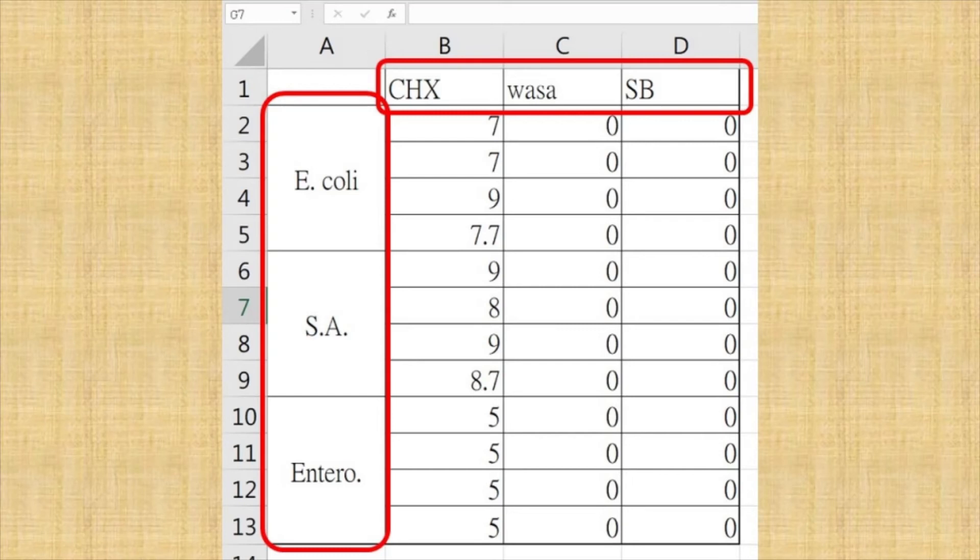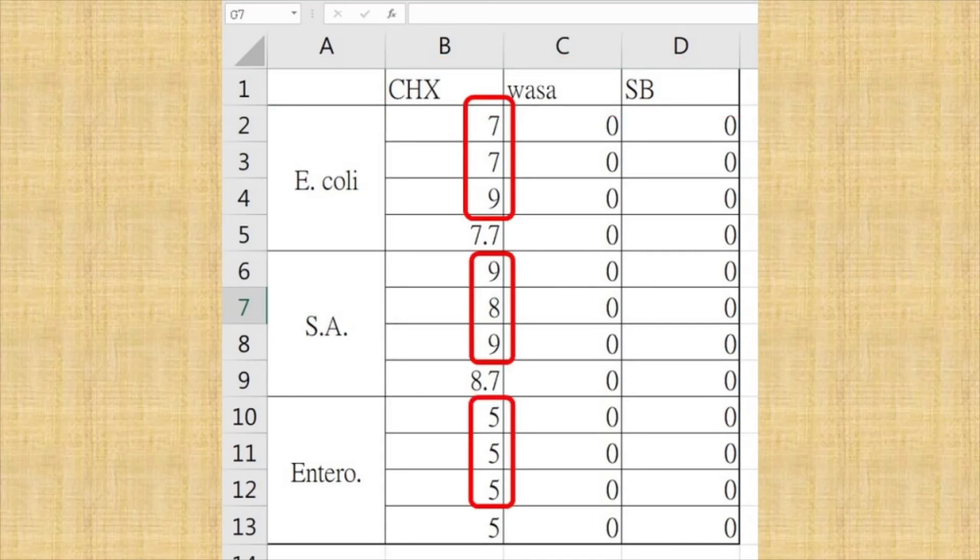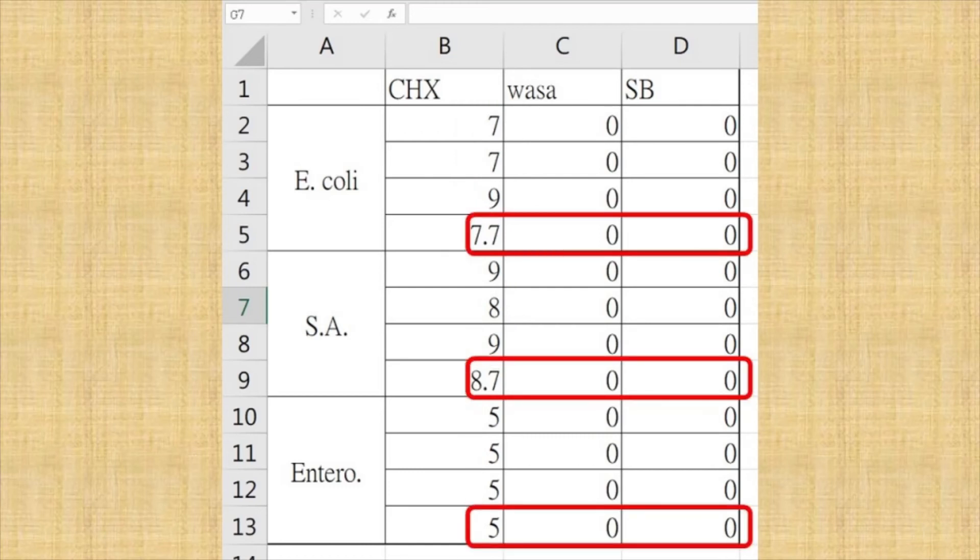Here is the data of our experiment. At the side, we can see the test substance and bacteria. And the number here is the diameter of the inhibition zone. And here is the average. The unit is millimeter. We can see that only the chlorhexidine group has inhibition effect. Neither the wasabi sauce nor wasabi paste has any inhibition effect on our test bacteria, indicating that there might not be any antimicrobial effect.